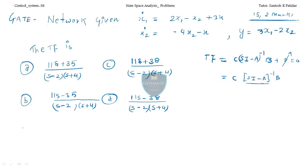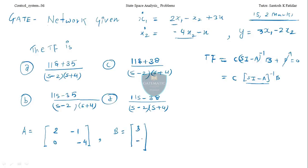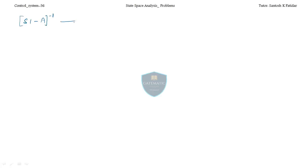First identify the matrices. A = [2, −1; 2, −1; 0, −4] — wait, A is [2, −1; 0, −4]. B = [3; −1]. C = [3, −2]. Now compute sI − A, which gives: [(s−2), 1; 0, (s+4)].